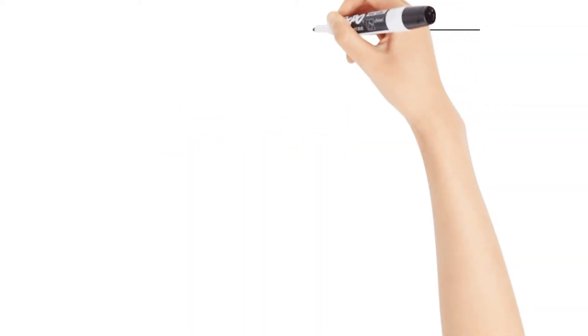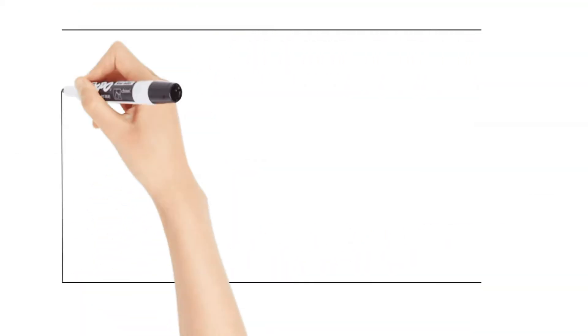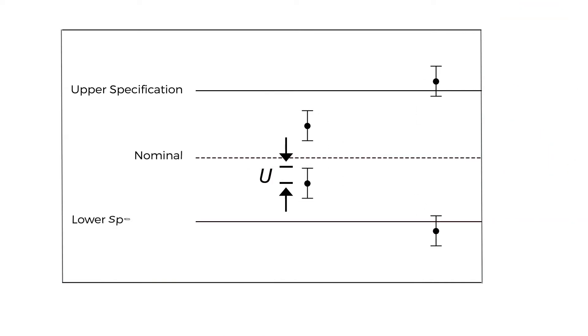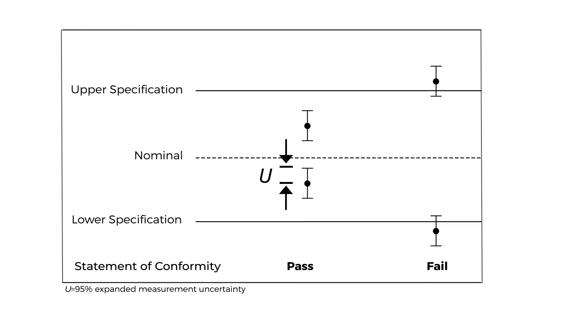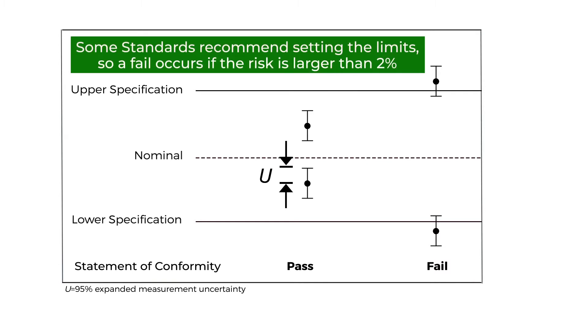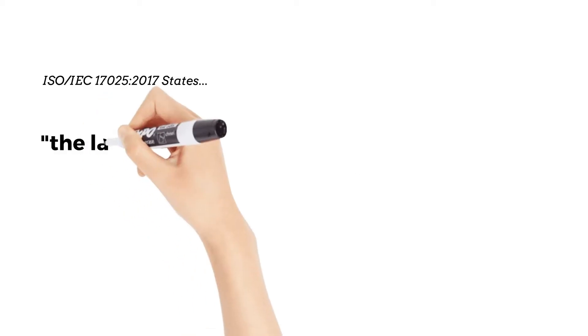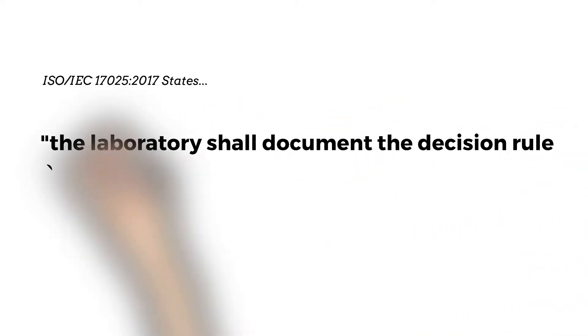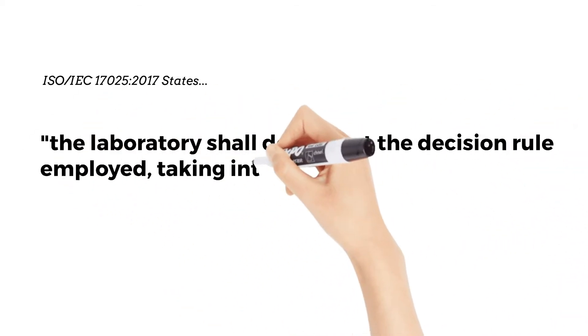Decision Rules and TUR. When discussing decision rules, we describe how measurement uncertainty is accounted for when stating conformity with a specified requirement. The conformity for most is binary, meaning either a pass or a fail, and some standards recommend setting the limits so a fail occurs if the total risk is larger than 2%. The laboratory shall document the decision rule employed, taking into account the level of risk.